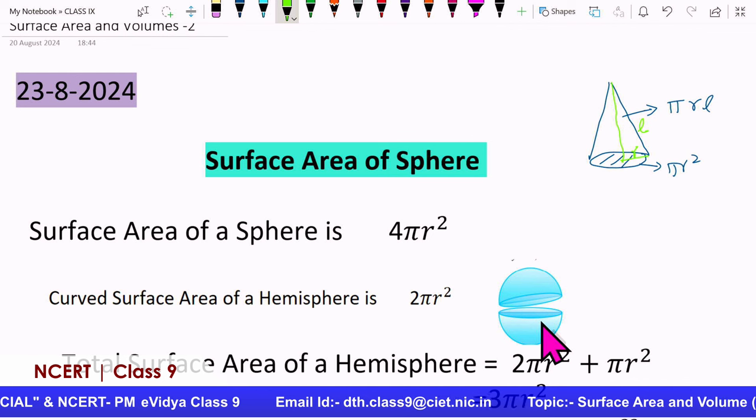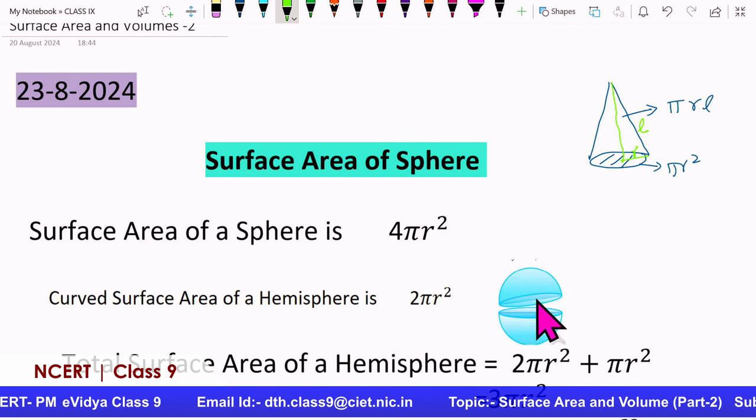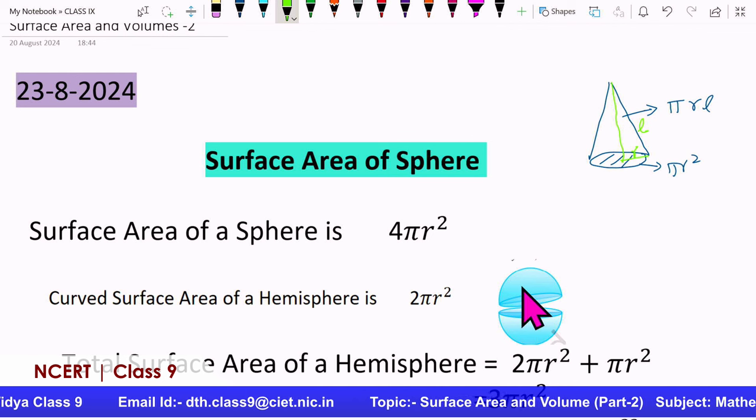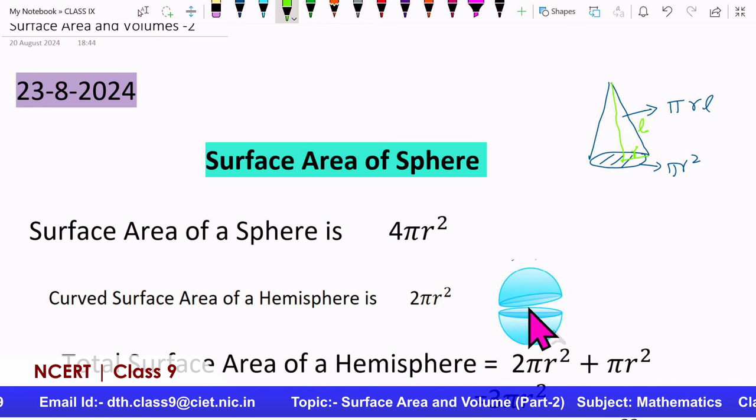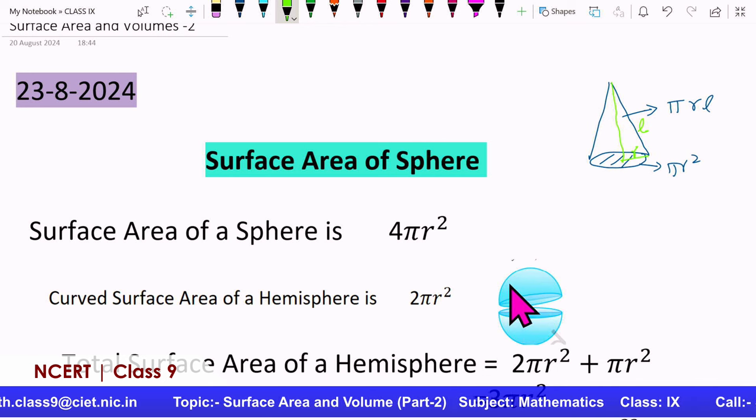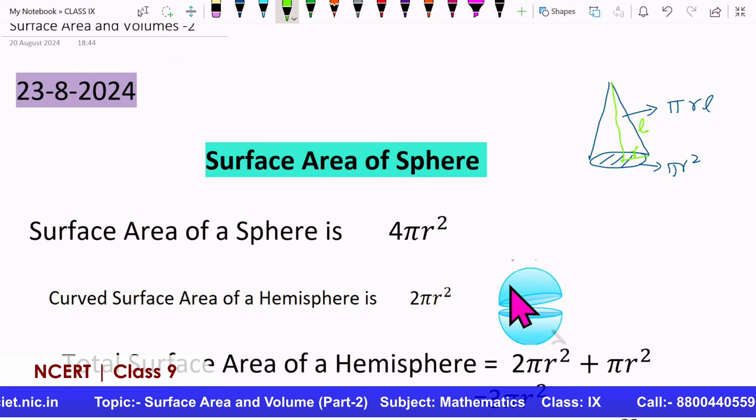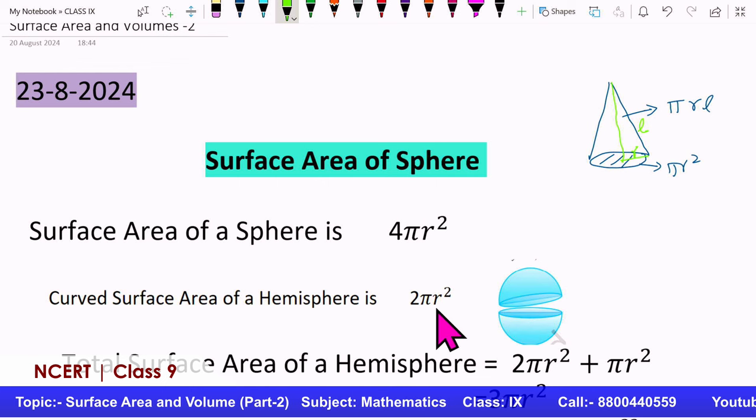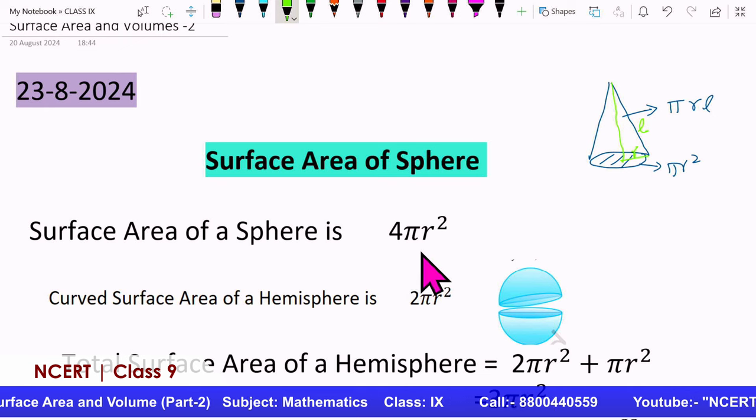So how many surfaces does this have? One surface is this curved part and one is the base surface. Yes. So there are two surfaces for a hemisphere. True. This hemisphere is half part of the sphere. So its curved surface area will be 2πr², which is half of 4πr².